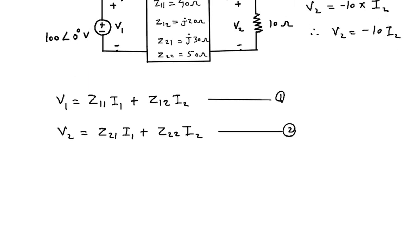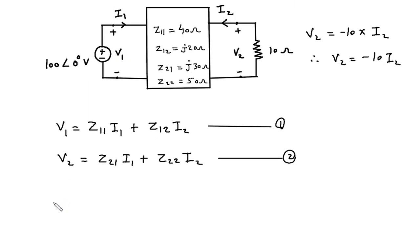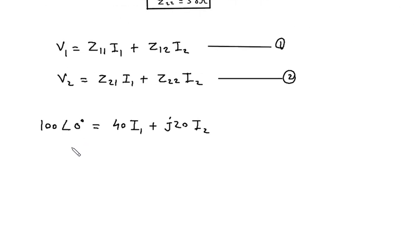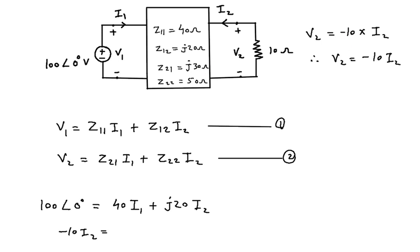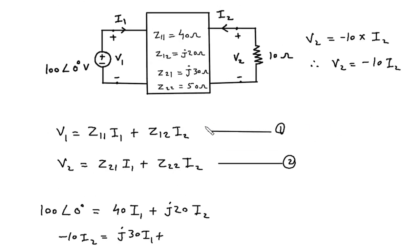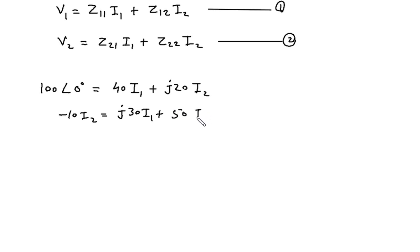Substituting into equation 1: 100∠0° = Z11·I1 + Z12·I2. Z11 = 40 Ω, so 40·I1 + j20·I2. For equation 2: V2 = -10·I2, so -10·I2 = Z21·I1 + Z22·I2. Z21 = j30, so j30·I1, and Z22 = 50 Ω, giving 50·I2.